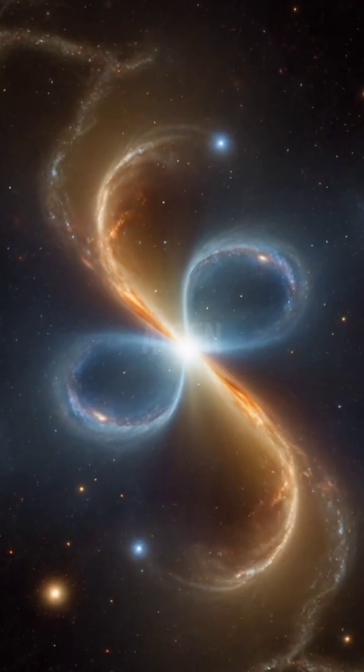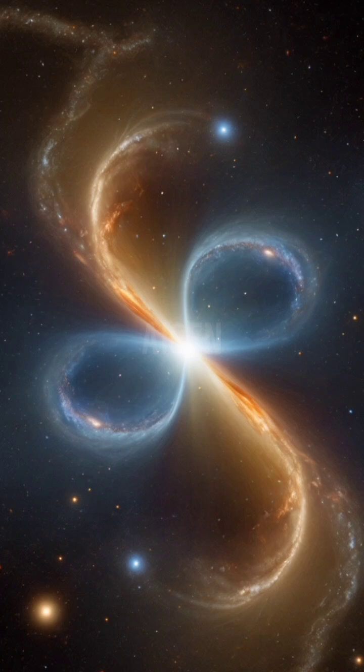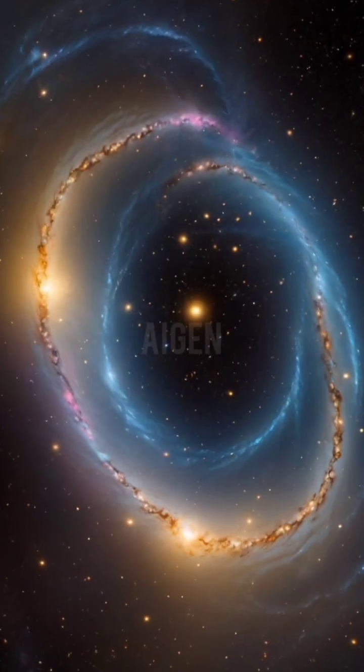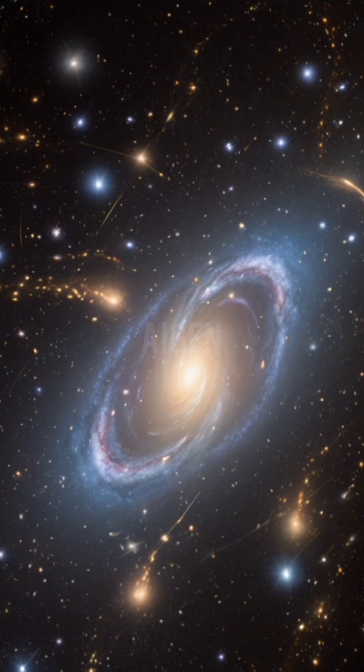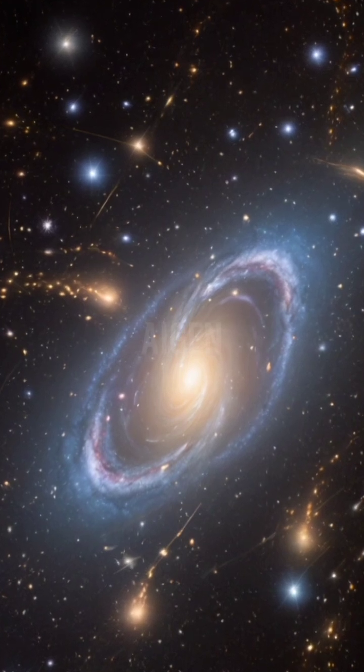We know it exists because of the way galaxies spin. If only visible matter were present, galaxies would fly apart. But dark matter's unseen gravity holds them together like cosmic glue.